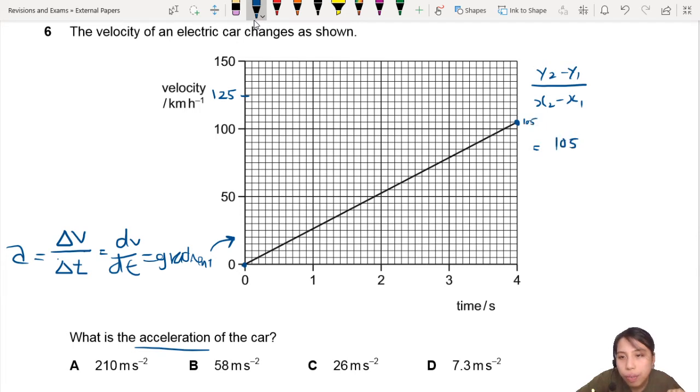So 105 minus 0. And be very, very, very careful with the units. This is in kilometers per hour. So I'm just going to give you a heads up. You need to convert that later. And you have time, 4 seconds minus 0 seconds. So we're going to have 105 kmh over 4 seconds. Now here we have a problem.